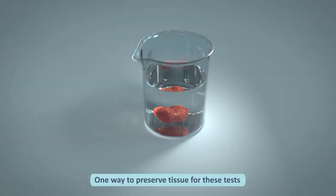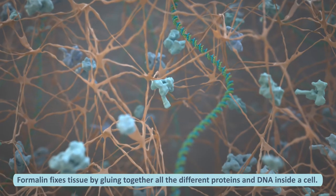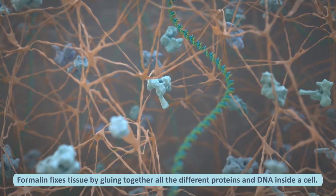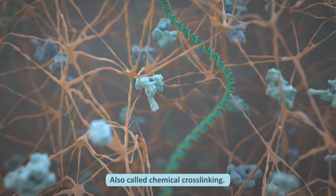One way to preserve tissue for these tests is to immerse it in a liquid called formalin, which is diluted formaldehyde. Formalin fixes tissue by gluing together all the different proteins and DNA inside a cell, also called chemical cross-linking.